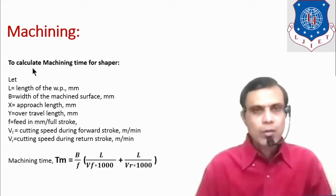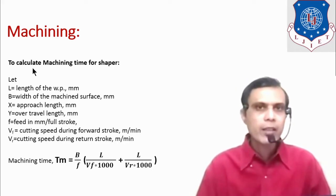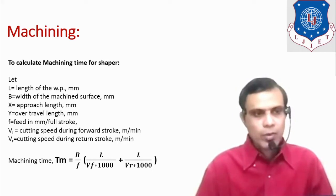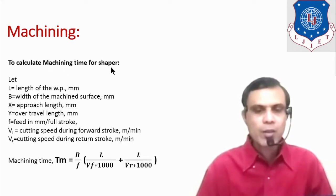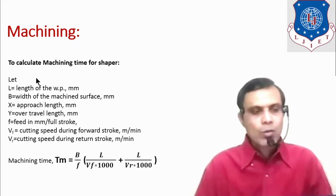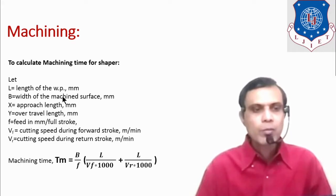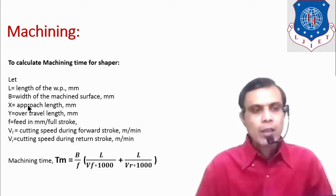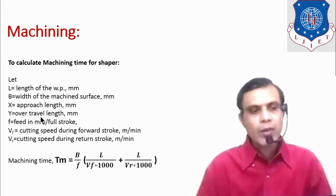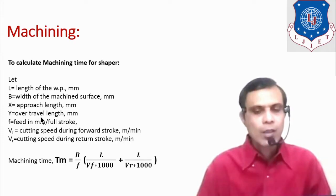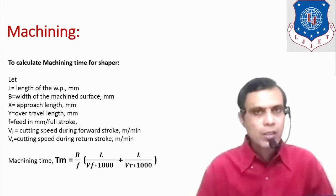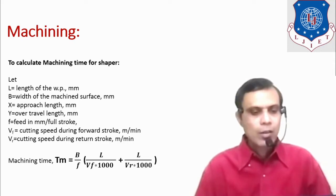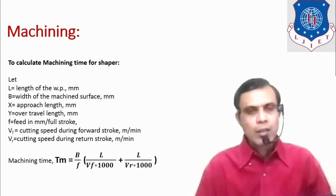Now, how do we calculate the machining time? This example is from the shaper machine. Let L be the length of the workpiece, B the width of the machined surface in mm, X the approach length, and Y the over travel length.